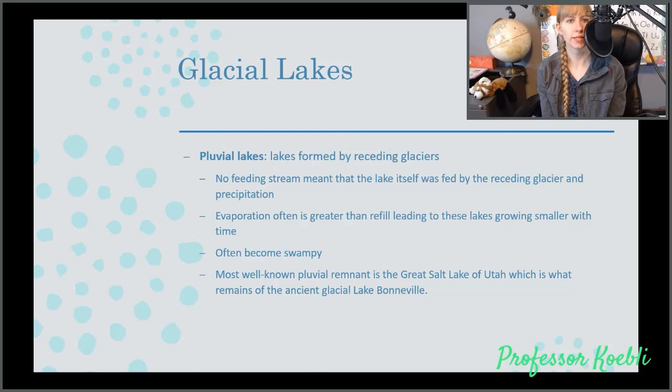Glaciers also can form lakes. As noted earlier, glaciers will gouge out material as they move, such as when they are in a V-shaped valley, they turn it into a U-shaped valley. But sometimes as ice sheets move along, they'll actually leave behind glacial lakes because of meltwater from the glacier fills in a dugout area forming a temporary lake, which is a pluvial lake. They don't have a feeding stream, meaning the lake itself was fed by the receding glacier and precipitation. Evaporation usually is greater than refill, leading to these lakes growing smaller with time. They often turn into swampy regions, such as the Great Swamp in New Jersey. The most well-known pluvial remnant is the Great Salt Lake of Utah, which is the remains of an ancient glacial lake known as Lake Bonneville.